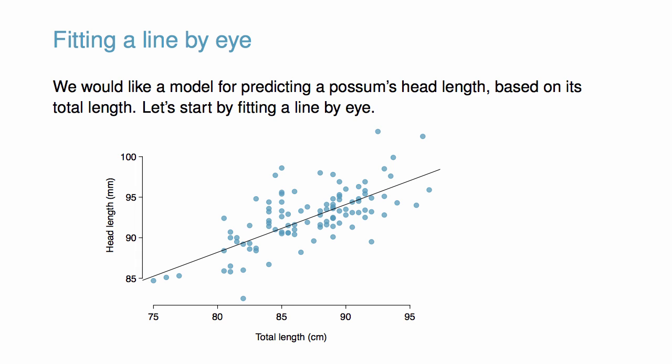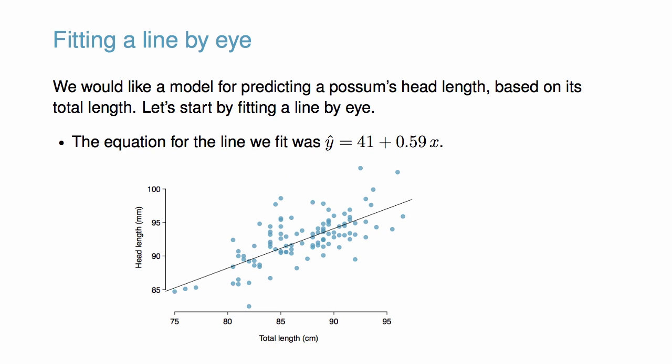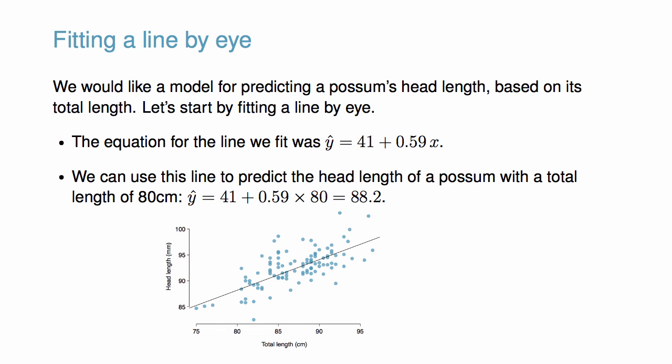Let's try using this particular model to predict head length. The equation for the line we fit was y hat equals 41 plus 0.59 times x. Notice the hat on y signifies that this is an estimate. We can use this line to predict the head length of a possum with a total length of 80 centimeters. We'd estimate a head length of about 88.2.